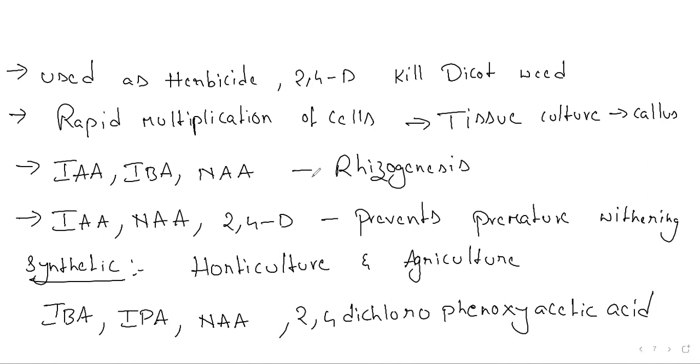Mainly used for root initiation, rhizogenesis, preventing premature withering of flowers and fruits, inducing parthenocarpy, and as weedicide. Mostly 2,4-D and 2,4,5-T are used as weedicide.